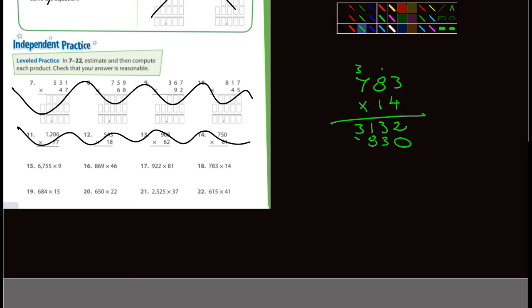1 times 3 is 3, 1 times 8 is 8, 1 times 7 is 7. Now we add these up: 0 and 2 is 2, 3 and 3 is 6, 8 and 1 is 9, 7 and 3 is 10. That was number 18: 10,962.